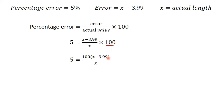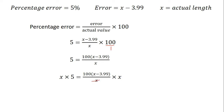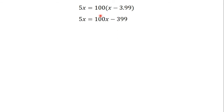In the videos on binomials under the topic algebraic expressions we explain this in detail. x times 1 gives us x. To make x the subject we multiply both sides by x to cancel out the fraction — x cancels x. So we have 5x on the left, and on the right we have 100 into bracket (x minus 3.99). We go ahead and open the brackets, which gives us 5x equals 100x minus 399.